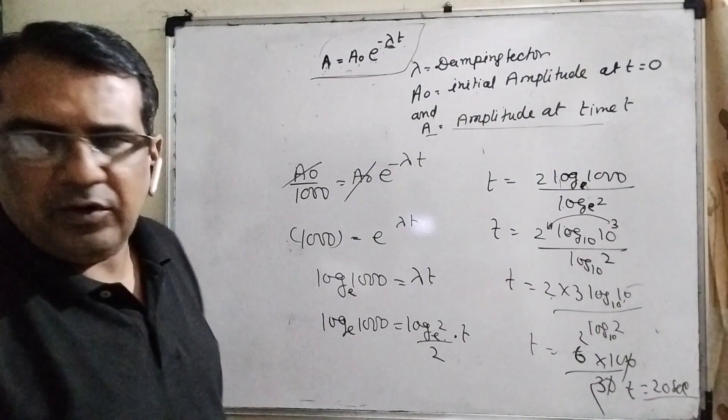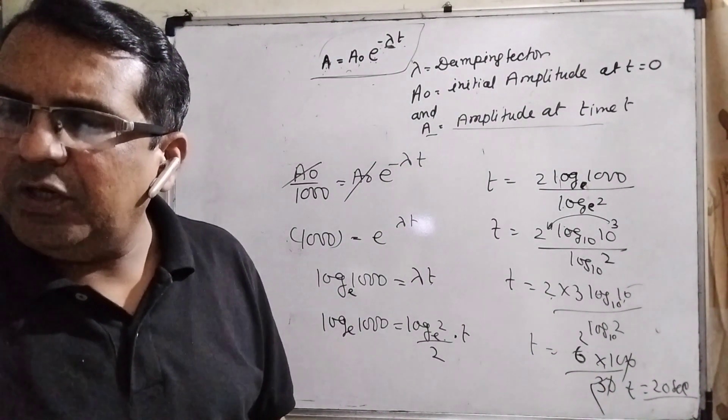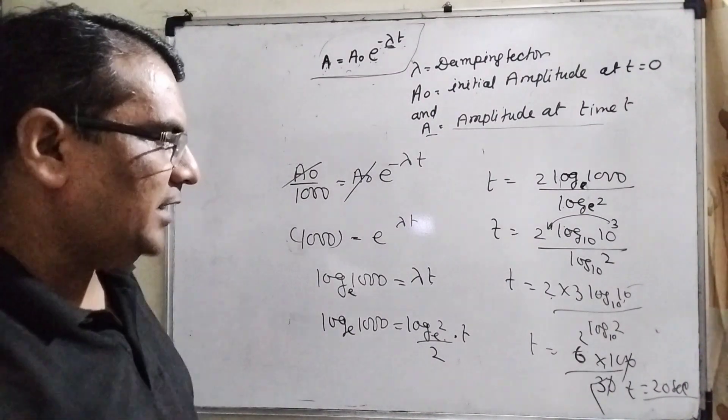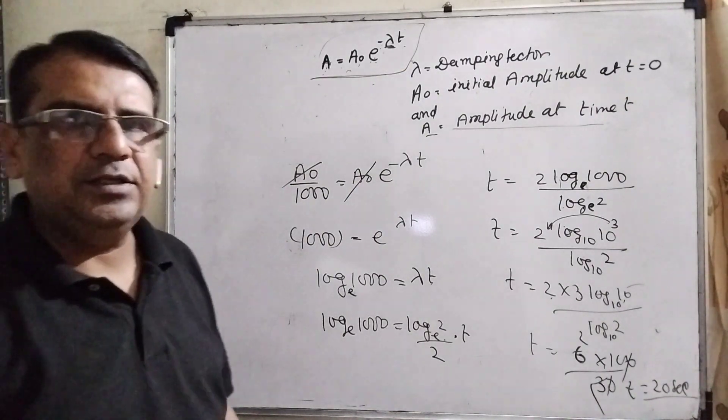So here, which option? 20 seconds, 50 seconds, 100 seconds, and 10 seconds. A option is correct because t equals 20 seconds. I hope so you understand this question.